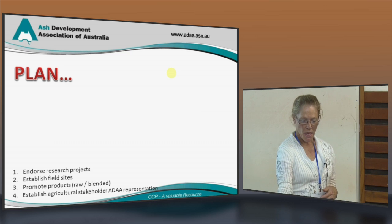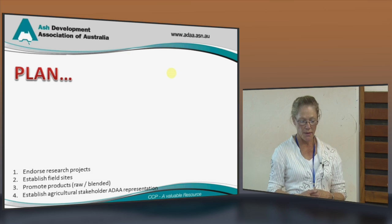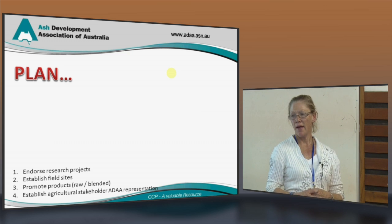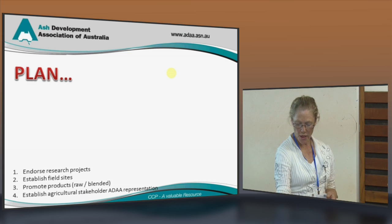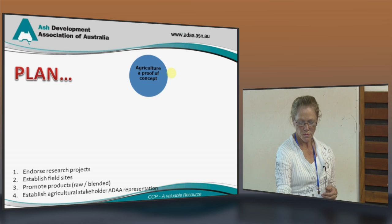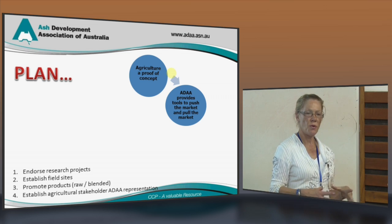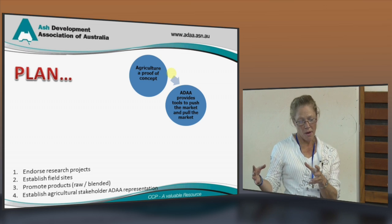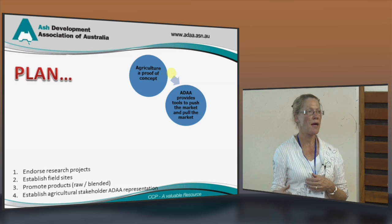Do we have a plan? We do have a plan. The plan is that we'll endorse our research projects. We haven't really got any field sites in Australia, so we need to promote those as well. We need to promote our raw and blended products. For the ADAA, we actually have to have stakeholder members from the agricultural sector, because that's how the ADAA managed to get the current cementitious industry off the ground. We have the tools to push the market — we can tell people that we have a product. And we also need to pull the market by giving customers the technical information, which is a major role of the ADAA.